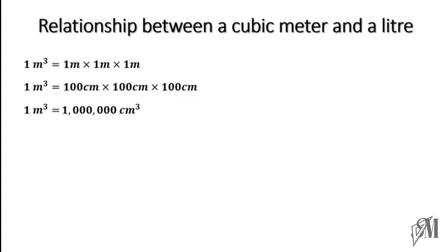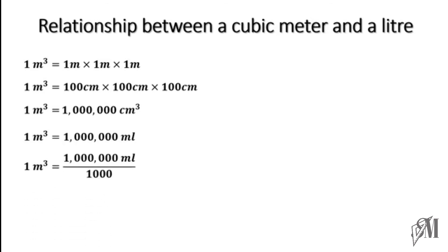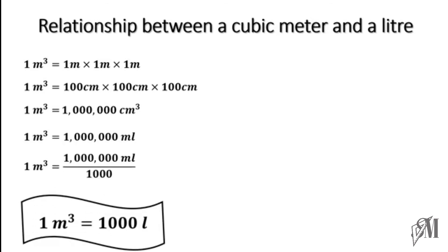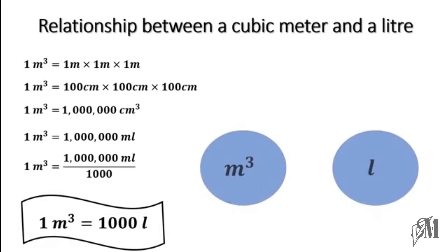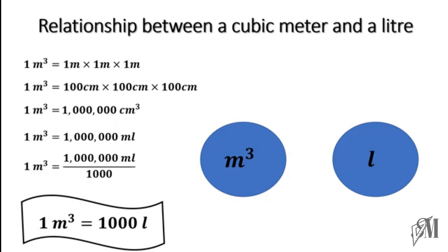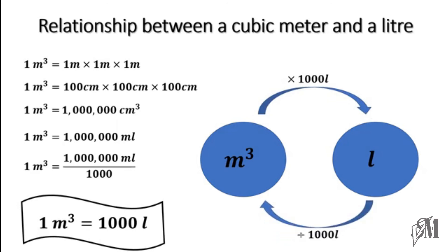One cubic meter equals a certain number of cubic centimeters. Since 1 cubic centimeter equals 1 milliliter, we write that value in milliliters, then divide by 1000 to get liters. The result is: 1 cubic meter equals 1000 liters. So to convert cubic meters to liters, multiply by 1000; to convert liters to cubic meters, divide by 1000.